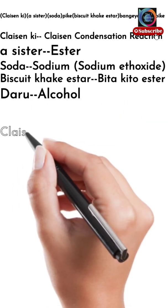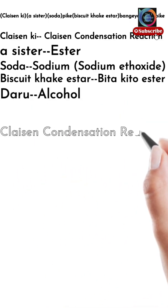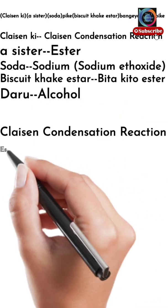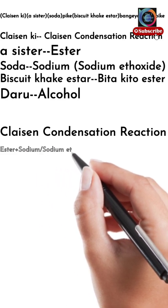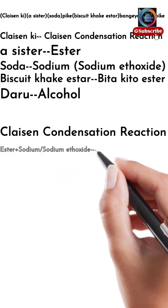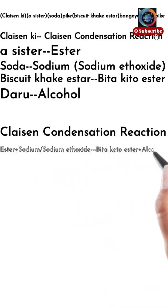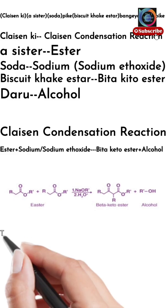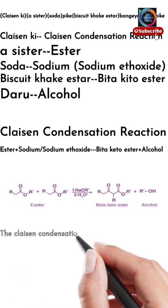'Daru' stands for alcohol. When we arrange all of these sequentially, we get the Claisen Condensation Reaction: first ester, then sodium or sodium ethoxide — we get beta-keto esters and alcohol.